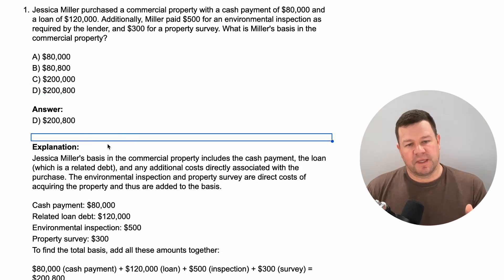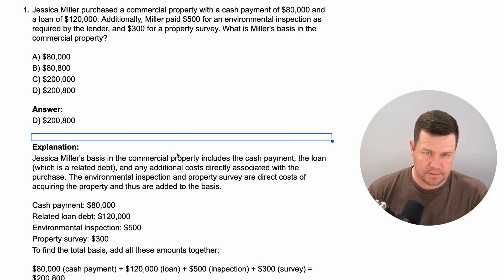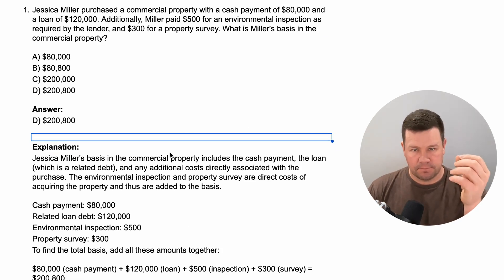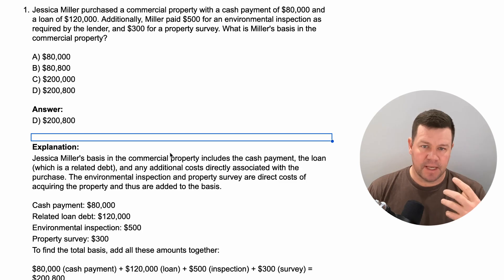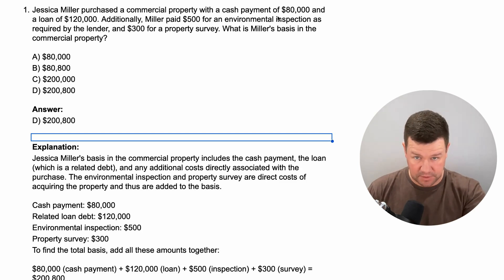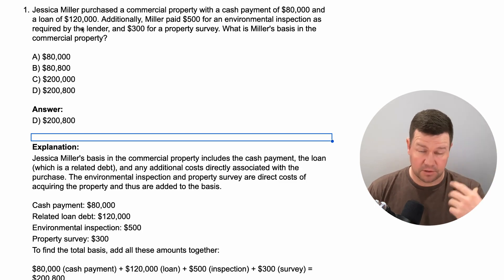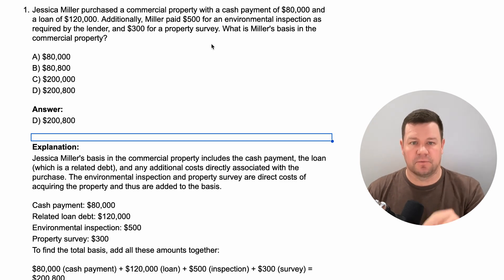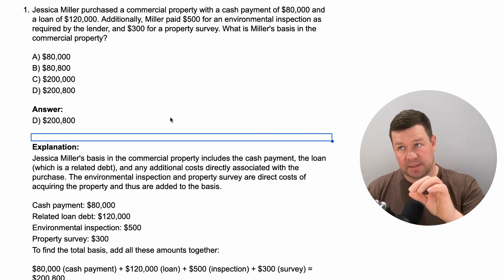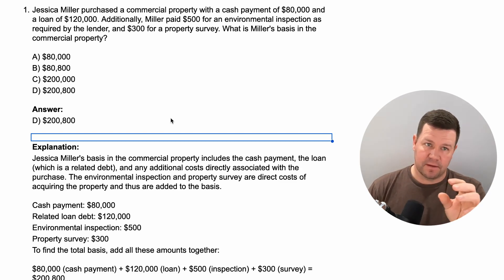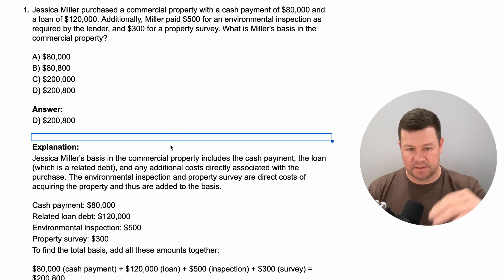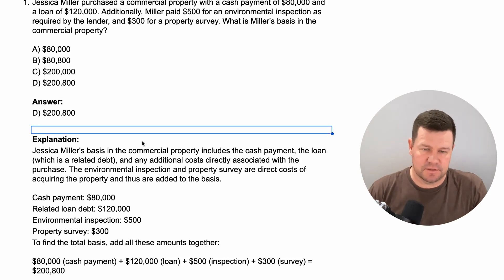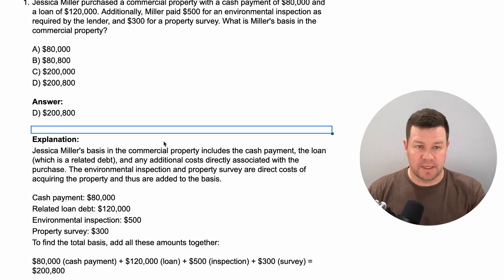The key takeaway from this problem is that the cash paid and any consideration given for the acquisition — in this case the cash paid and assuming a loan of $120,000 totaling $200,000 — plus any other direct costs related to the acquisition would be included. There are some things that might seem related but wouldn't be included, and we'll get to those as we keep going through these practice questions.